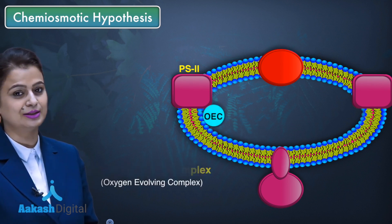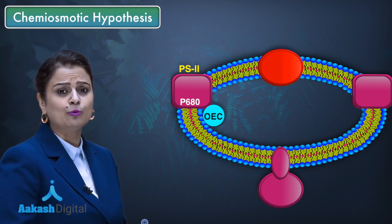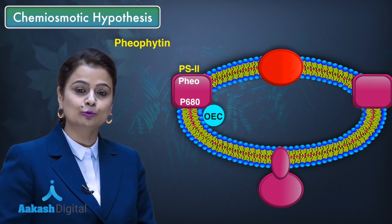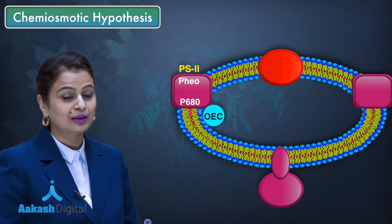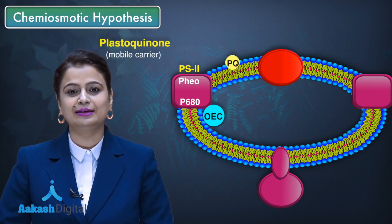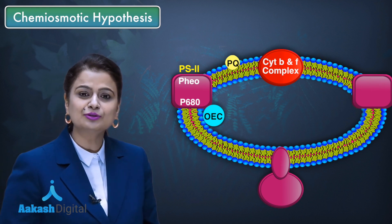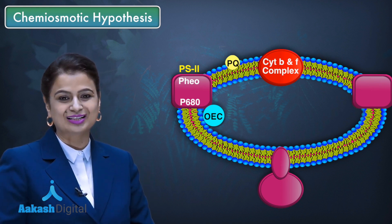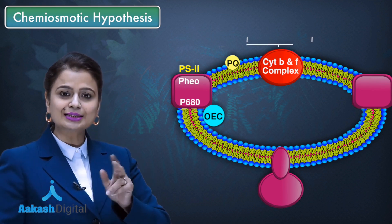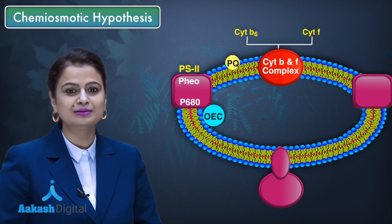In photosystem 2, the reaction center is formed by P680. Several components are present, including pheophytin, which is a colorless chlorophyll present inside photosystem 2. Then there is plastoquinone, which is not part of photosystem 2 — it is a mobile carrier present in the thylakoid membrane. Then there is the cytochrome b6f complex, which is involved in electron transport and contains iron, making it red in color.